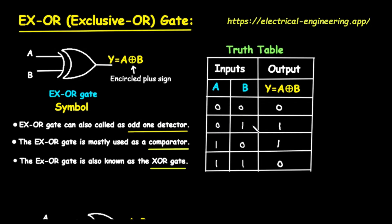In the second row, input A is zero and input B is one. Here, the inputs are different — they are exclusive — therefore the output Y is one. In the third row, input A is one and input B is zero. Just like the previous case, the inputs are different, so the output Y is one. In the final row, both input A and input B are one. Since the inputs are the same again, the output Y goes back to zero.